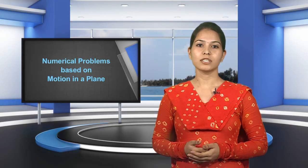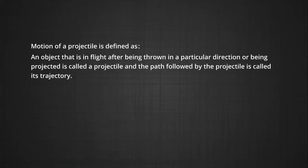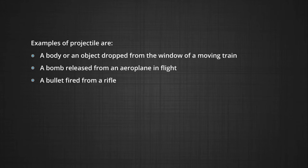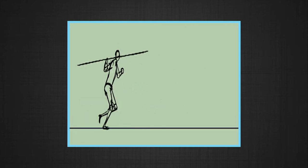Now we shall discuss about the motion of a projectile. Motion of a projectile is defined as an object that is in flight after being thrown in a particular direction or projected — it is called a projectile. The path followed by the projectile is called its trajectory. Examples include a body dropped from the window of a moving train, a bomb released from an aeroplane in flight, a bullet fired from a rifle, and a piece of stone thrown in any direction.